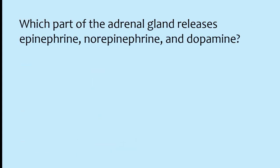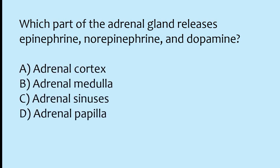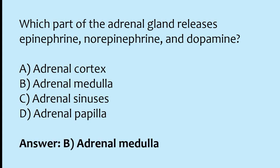Which part of the adrenal gland releases epinephrine, norepinephrine, and dopamine? Options: adrenal cortex, adrenal medulla, adrenal sinuses, adrenal fibella. The correct answer is option B: the adrenal medulla part of the adrenal gland releases epinephrine, norepinephrine, and dopamine.